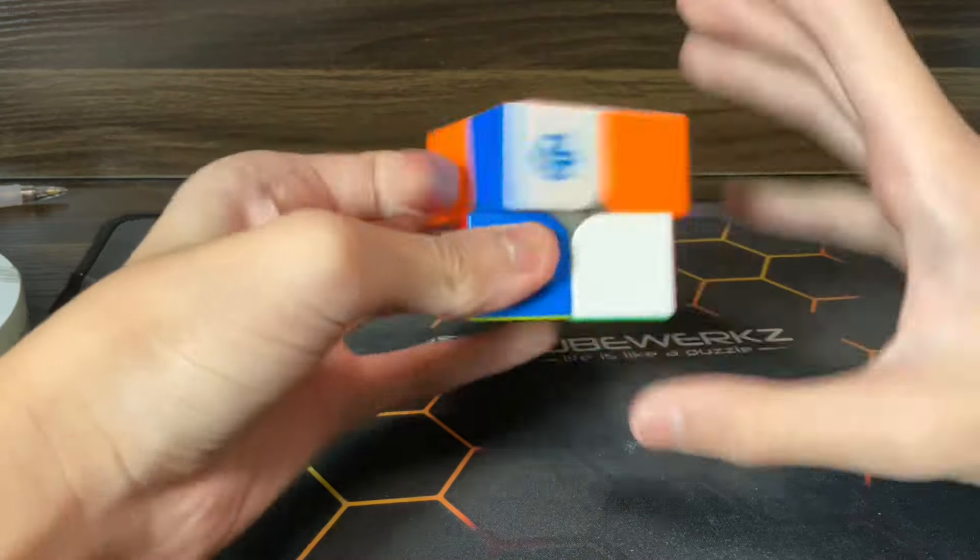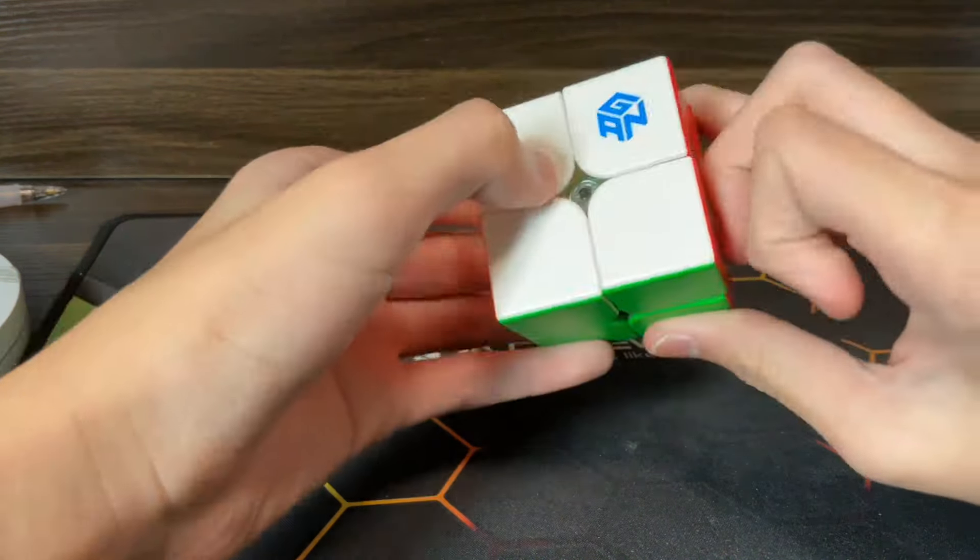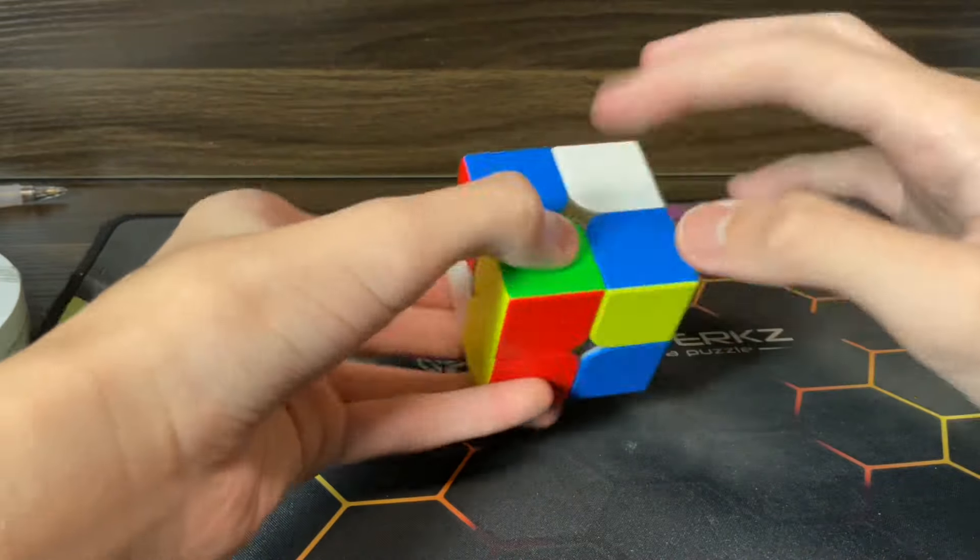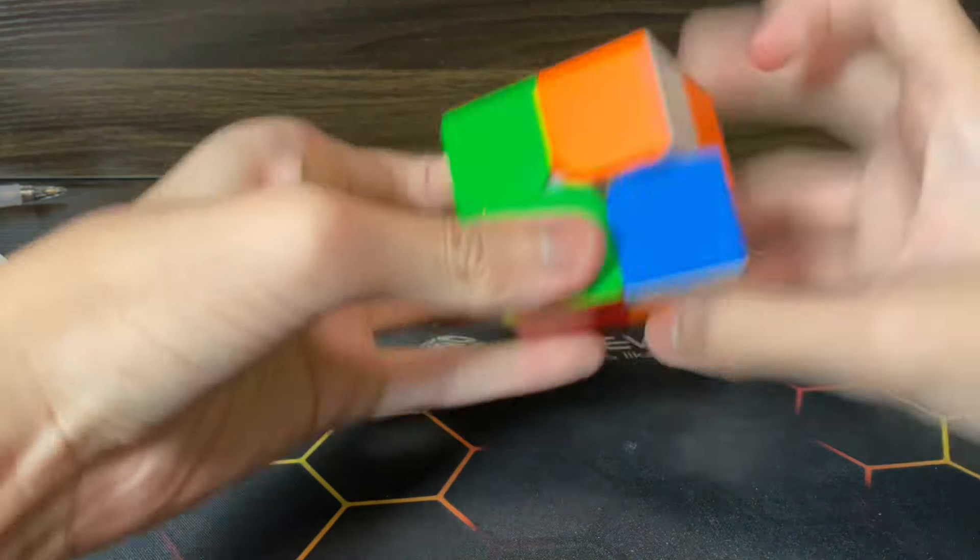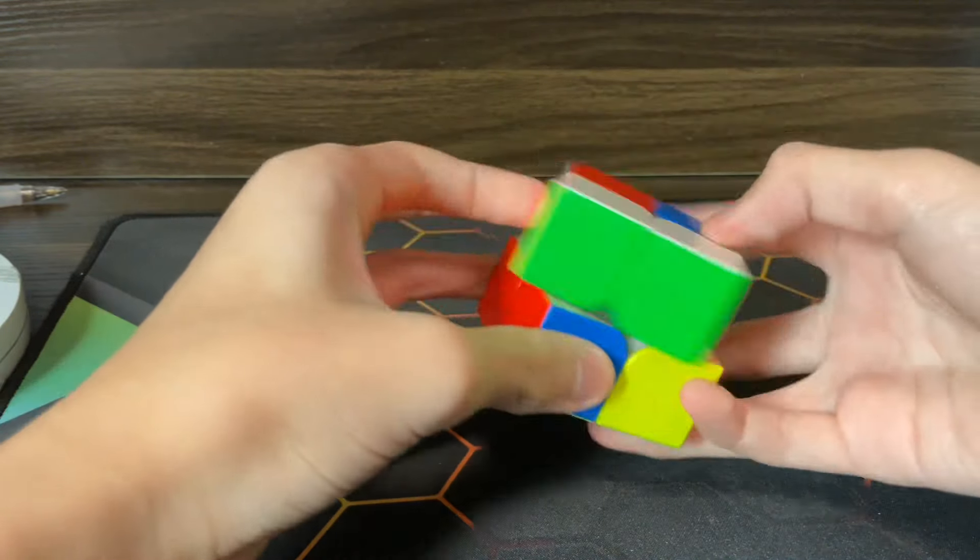Other additional options are on green you do R2 F2 R U R prime F, or on red you can do U2 R2 U R prime R. But I think the best one is still on yellow where you do R2 U2 R U R prime U.